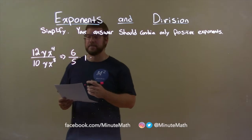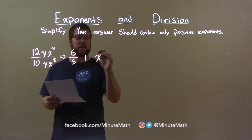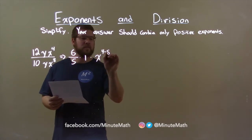Lastly, we have the variable x. We have x to the 4th power divided by x to the 8th power. We subtract the exponents, and that's x to the 4 minus 8th power.